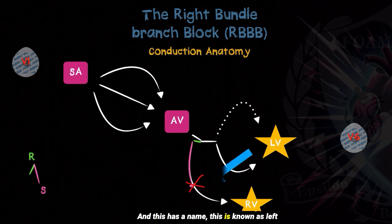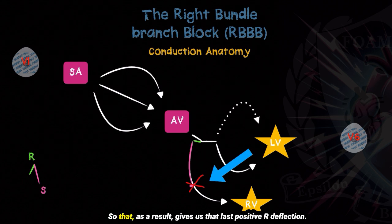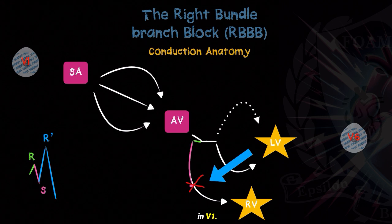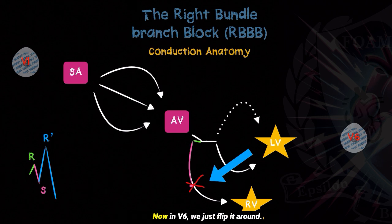This is known as left-to-right myocyte-to-myocyte conduction. As you can see, this final impulse is still traveling towards the direction of V1, and as a result, it gives us that last positive R prime deflection in V1. The color scheme in the diagram shows you why we get that RSR prime pattern in V1.